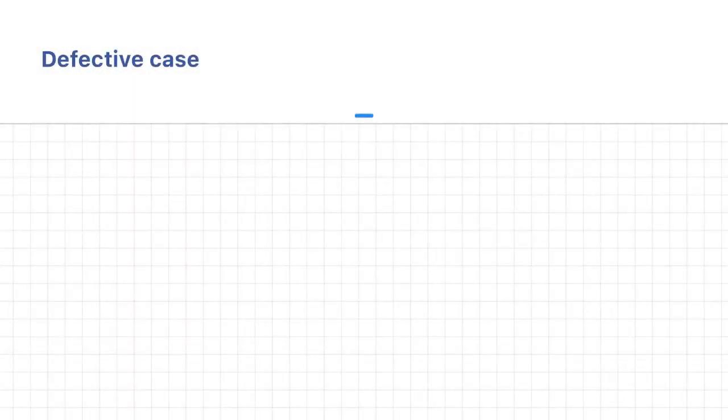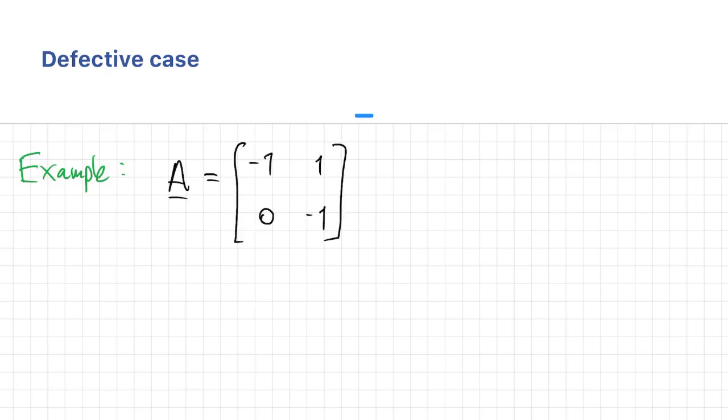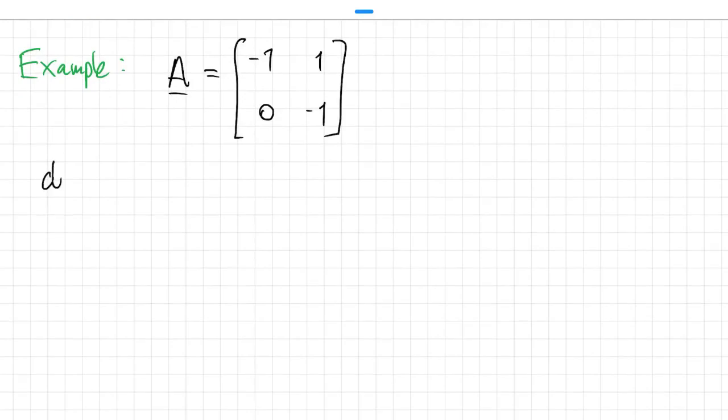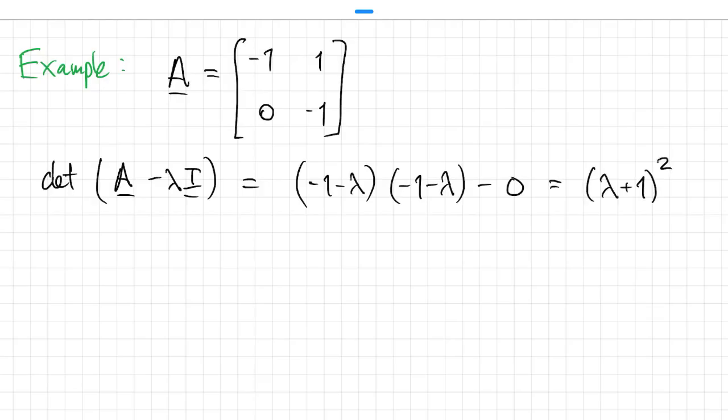We still have to talk about how to compute the matrix exponential in the defective case. It's easiest to explain with an example. So if we were to work out the eigenvalues of this matrix, we'll find the characteristic polynomial, and we'll see that it's just lambda plus 1 quantity squared.